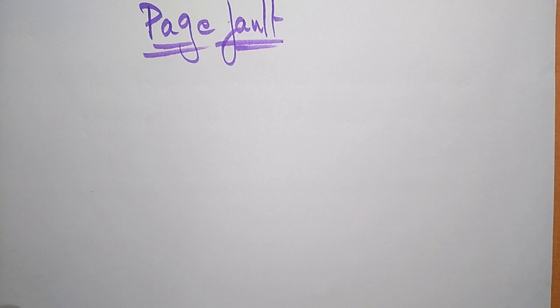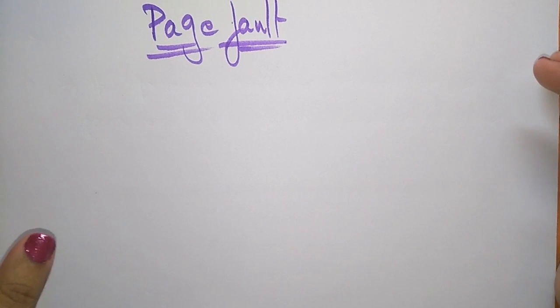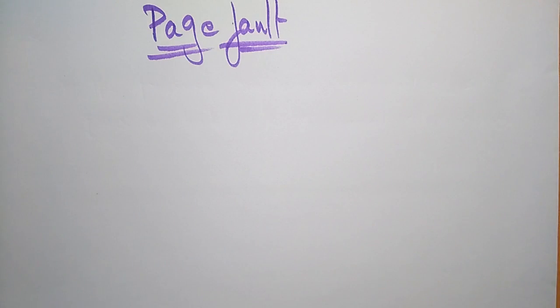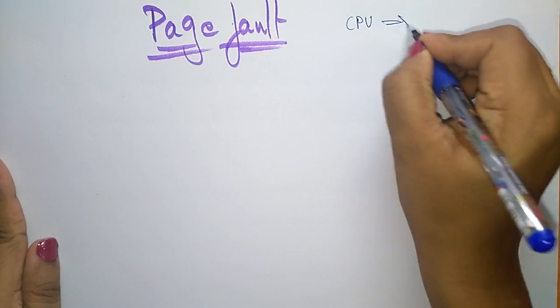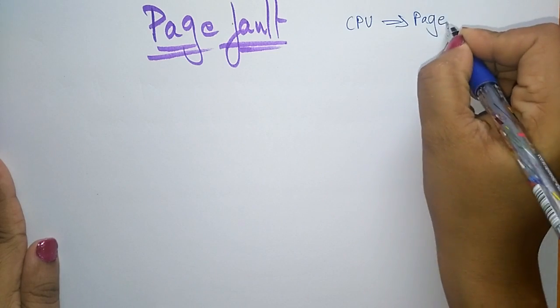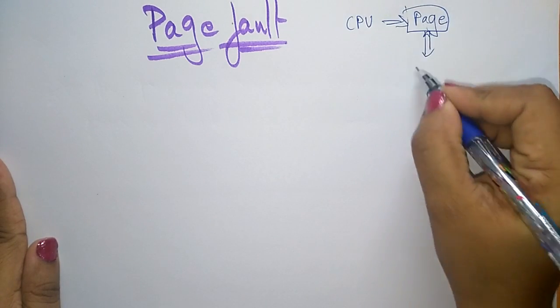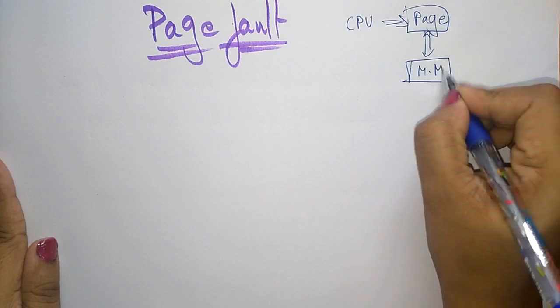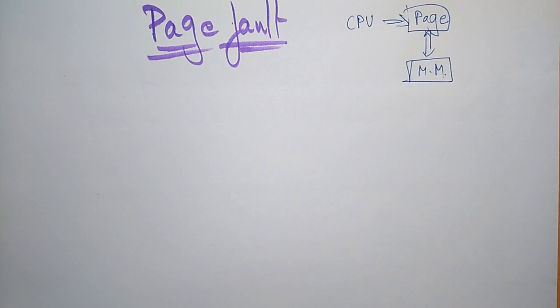Hi students, welcome back. So in the previous video I explained about demand paging. Demand paging means the CPU is demanding a page in the main memory. So the CPU always demands a page from the main memory.